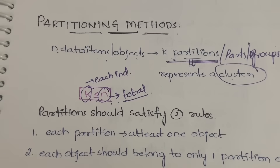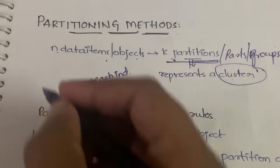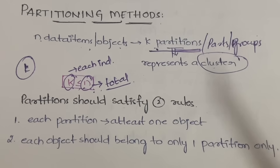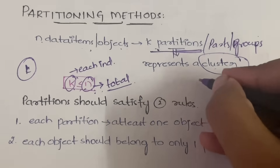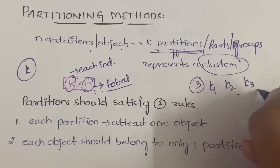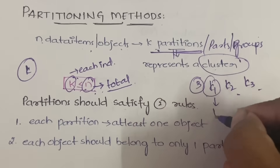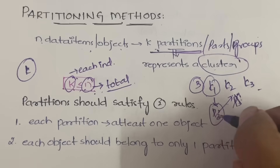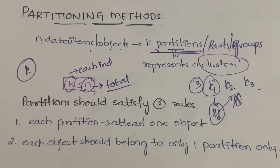When partitioning the data, you have to follow two rules. First, each partition should have at least one object — in each and every partition you must have a minimum of one object. Second, each object should belong to only one partition. For example, if you have three clusters k1, k2, k3, a data point p3 in k1 cannot also appear in k2 — one data object should belong to only one partition.